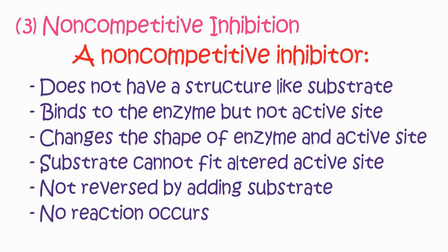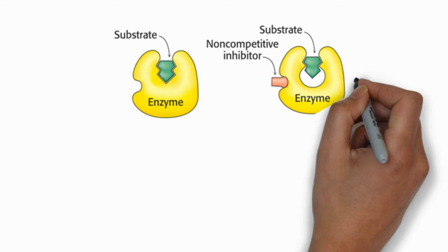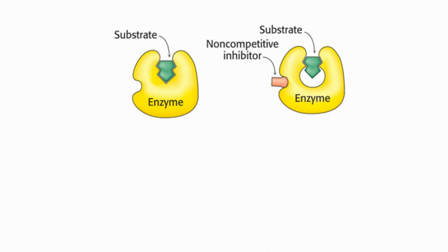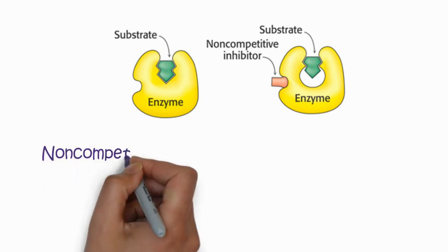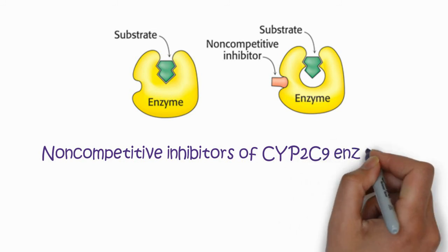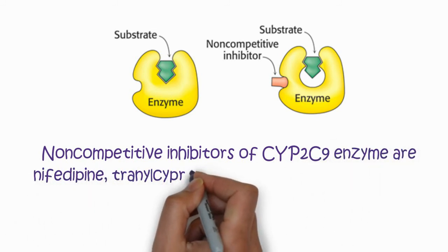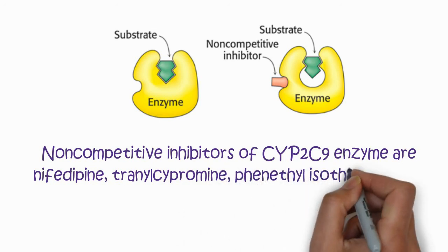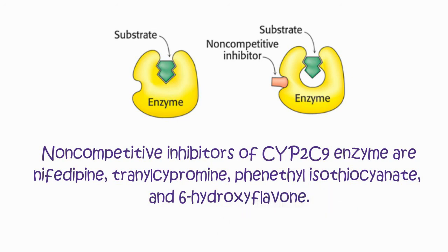Since the substrate cannot fit the altered active site, no further reaction is possible, and this effect cannot be reversed by adding more substrate. You can see the non-competitive inhibitor is attached to another site and changes the active site. Examples include CYP2C9 enzymes, nifedipine, trans-isopropyl isothiocyanate, and 6-hydroxyflavone.